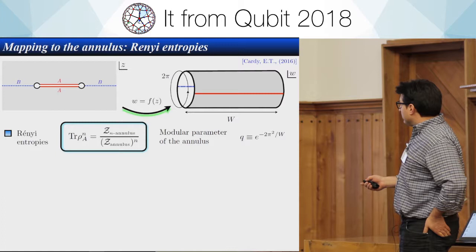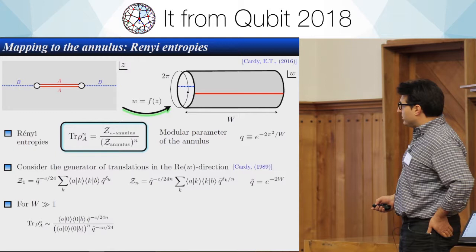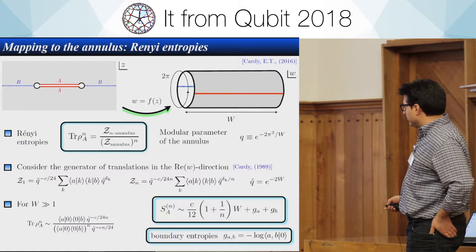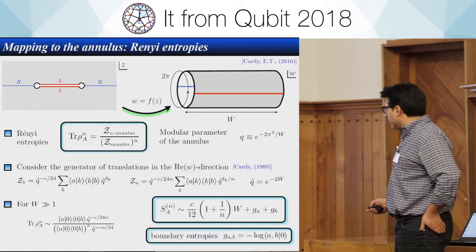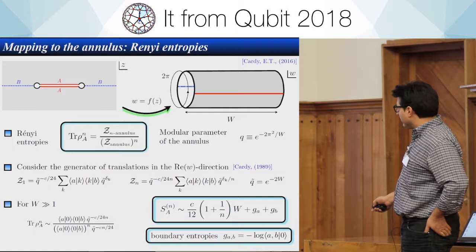If you introduce the modular parameter and use modular invariance, you can write this expression in the regime where the width W is very large, and find that the Rényi entropies can be written as (c/12) times a factor depending on n, times W — where W is a geometrical quantity in this picture. The boundary entropies, namely the Affleck-Ludwig entropy related to the boundary conditions imposed here, play a role and enter the non-universal part of the Rényi entropy.